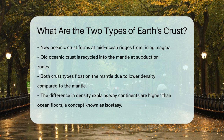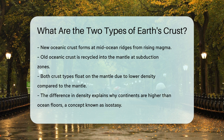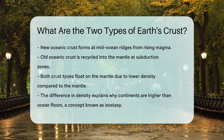The Earth's crust is composed of two main types: the thicker, less dense continental crust made of felsic rocks like granite, and the thinner, denser oceanic crust made of mafic rocks like basalt. Each type has unique characteristics that shape our planet's surface and history.